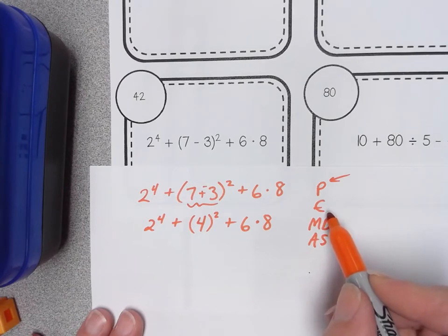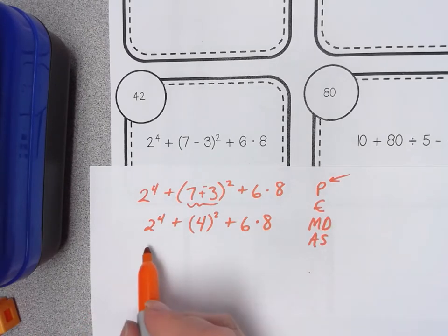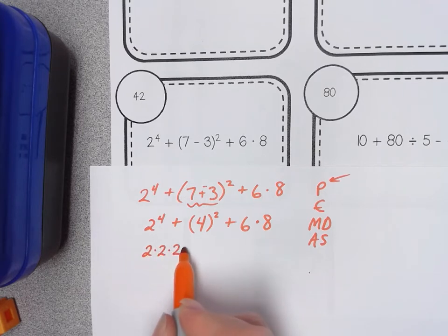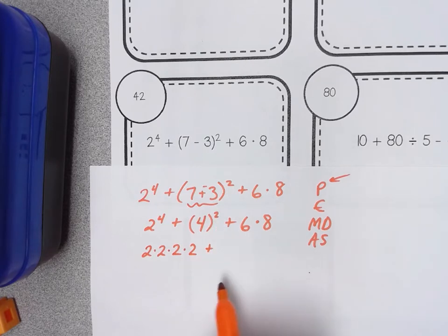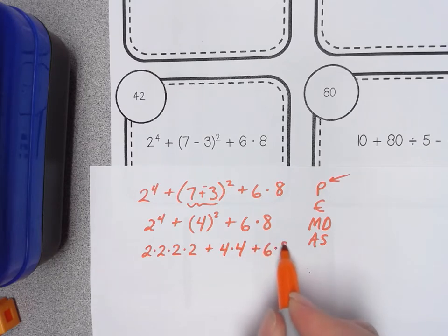So here in my exponents I notice 2 to the 4th. This is where I think it might be wise to write this out and show its meaning. This is called expanded form and could I show you what 4 to the second power means? Yep that means the base 4 is used twice in multiplication plus 6 times 8.